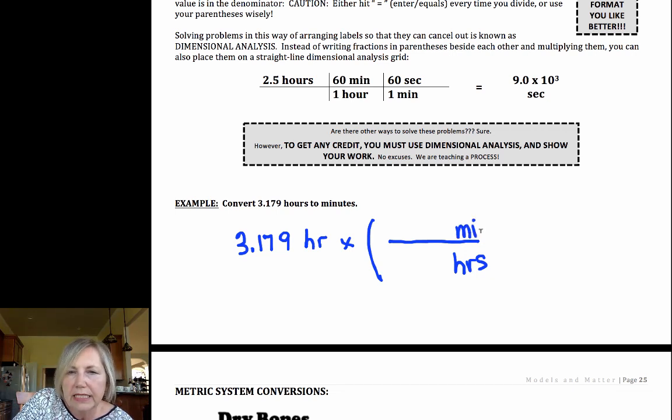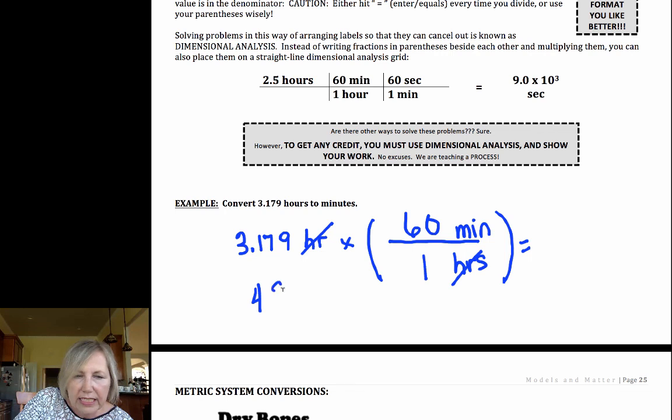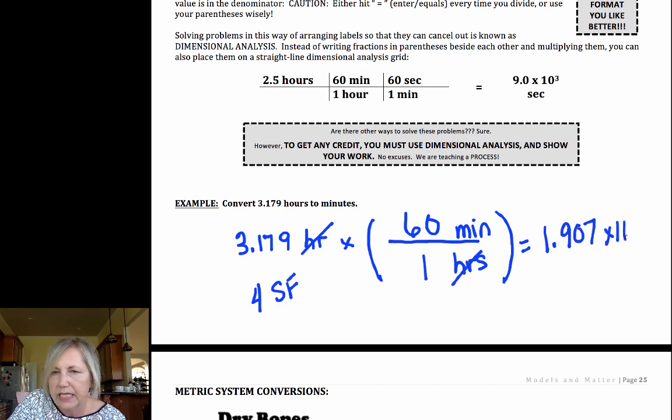The 1 goes before the hour. The 60 goes before the minute. My hours cancel. Double check that that happens. I need 4 significant figures in my final answer. So I'd have 1.907 times 10² minutes.